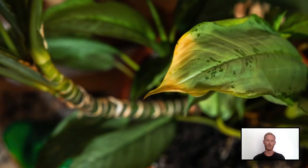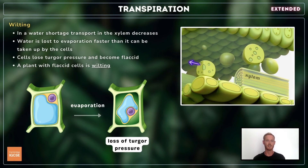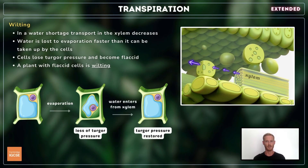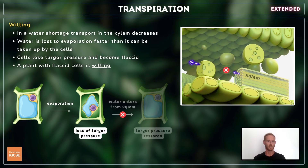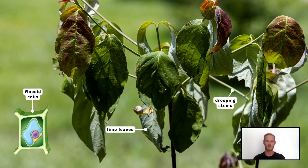Finally, you need to explain how and why wilting occurs. As a cell loses water, its turgor pressure falls. When water is plentiful, water from the xylem moves into the vacuole from the cell wall, and turgor pressure is restored. If water is scarce, however, transport in the xylem decreases, meaning the water lost to evaporation cannot be replaced quickly enough. This causes the cells to become flaccid, and a plant with flaccid cells is said to be wilting.